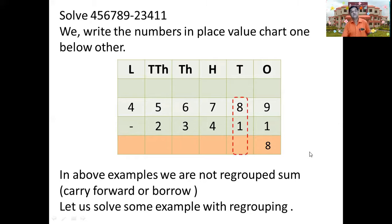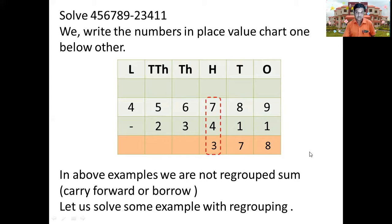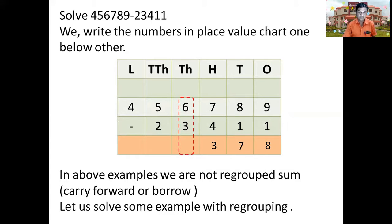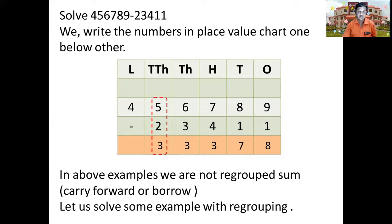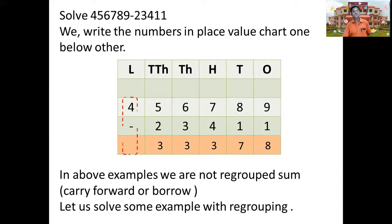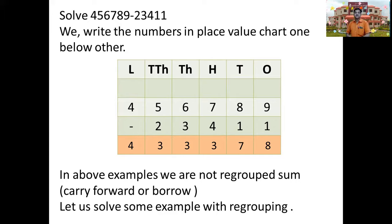Subtracting 4 from 7 in the hundreds place we get 3. Subtracting 3 from 6 in the thousands place we get 3. Subtracting 2 from 5 in the ten-thousands place we get 3. As we do not have anything to subtract from 4 in the lakhs place, 4 minus 0 gives us 4. So the answer is 433,378.